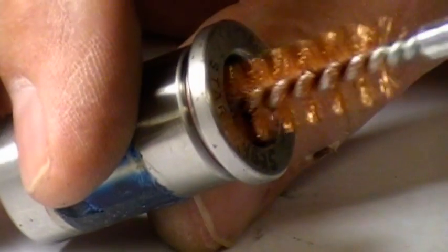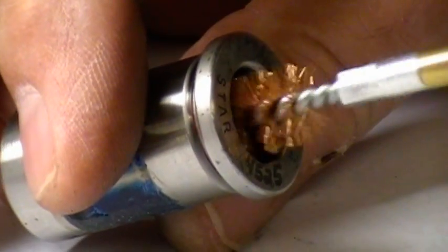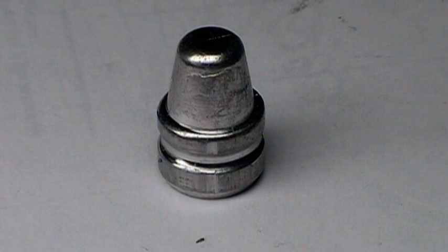After cleaning all the lube holes with the number 50 bit, clean the die with an appropriate bore cleaning brush to remove any remaining chips that might be pushed into the die by the cleaning operation.